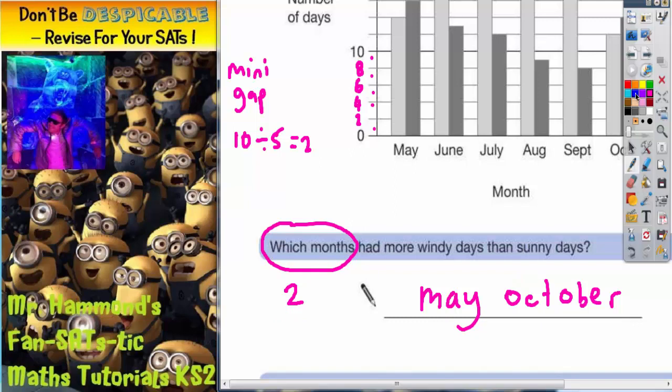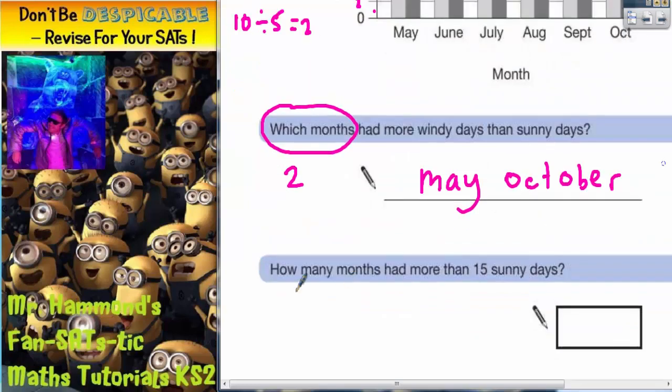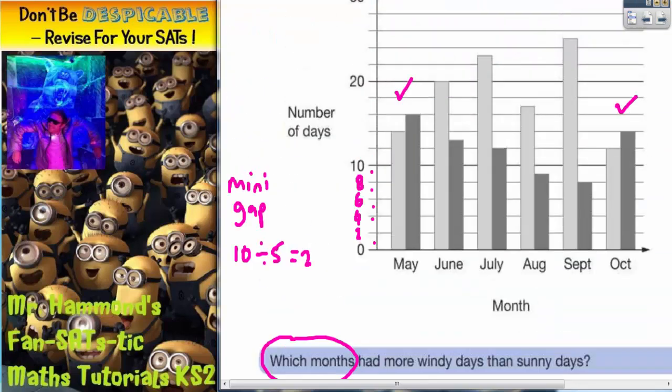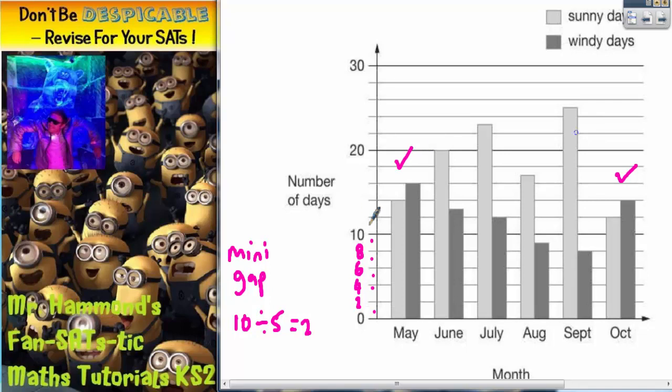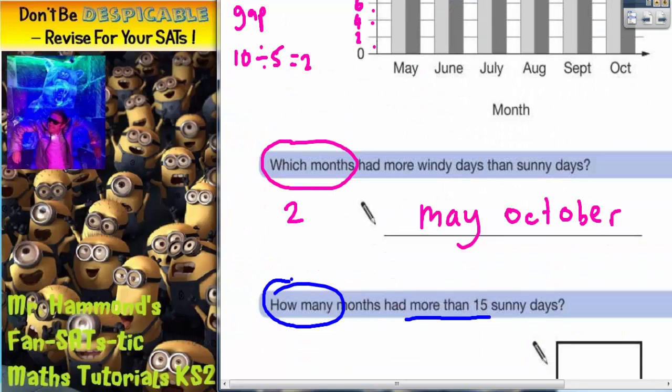Let's get a different color for the second part of the question. It then says how many months had more than 15 sunny days. So this one is how many. More than 15. Well 15 is halfway between 10 and 20. So halfway between 10 and 20 is there. So what we could do is draw a line all the way across. Because that line represents 15.